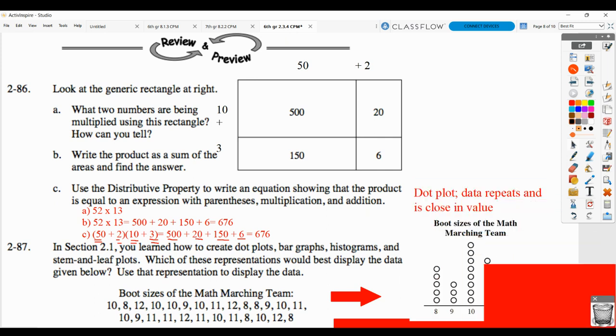So what you would find is because the data repeats, there's a lot of repeated values in here, and they're all very close in value, dot plots would be the best way to represent it. So when you do that, you need to have a title on it, and then you need to have a label on the bottom, like boot sizes. And of course, 8 comes up 5 times, so it should have 5 dots. 9 comes up 3 times, should have 3 dots, and so on.